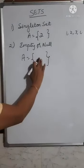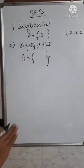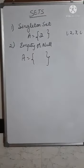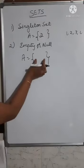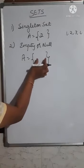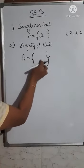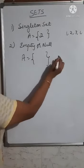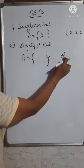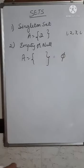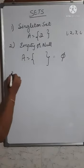So you cannot get any natural number between 2 and 3, therefore it is an empty set. Such a set where you don't get any element is called an empty set. You write it either as empty brackets { } or using the symbolic notation for null set, which also represents the empty set.